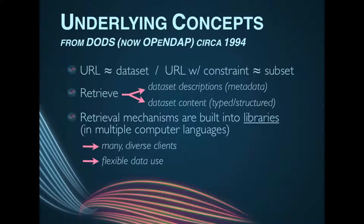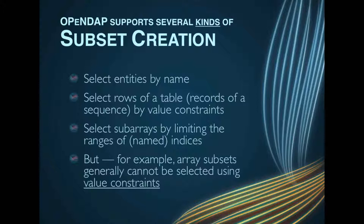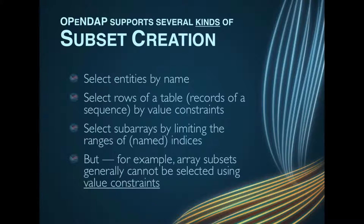Within this OpenDAP framework, one can perform several kinds of subsetting: selecting data set entities by their names, selecting rows of a table by constraints on their values, and selecting subarrays by limiting the ranges of their indices. However, there are limits — for example, array subsets generally cannot be selected using value constraints.